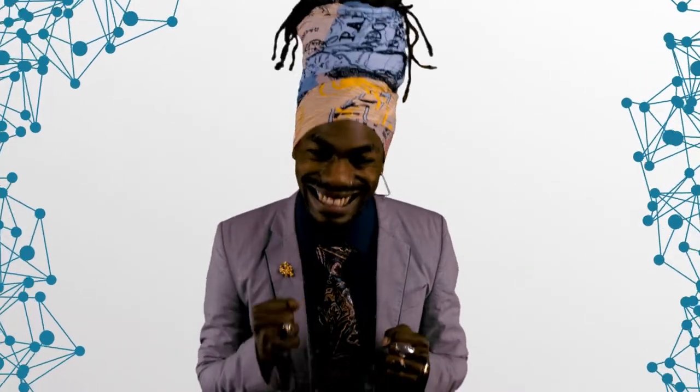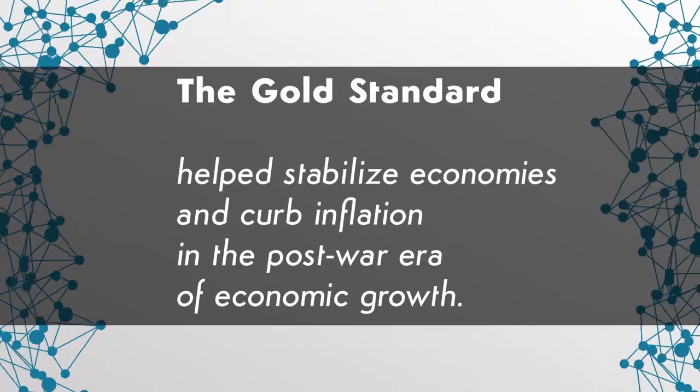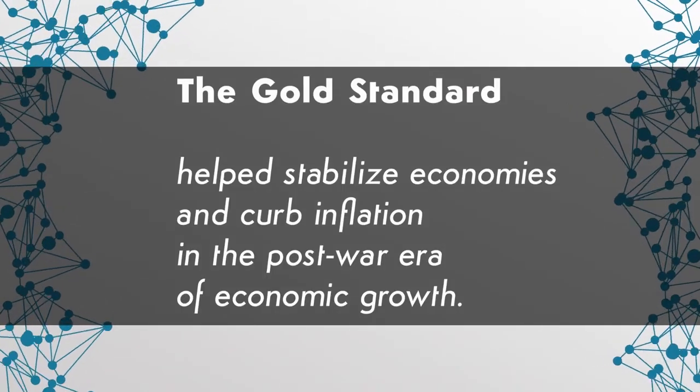The concept behind a stablecoin is to have its value fixed to a different, more stable asset. This idea is called pegging. The origins of pegging can be traced back to the gold standard, a system where a currency's value was linked directly to gold. The gold standard, even though not used by any government at the moment, had many benefits, especially in the post-war era of economic growth. It stabilized economies and curbed inflation.